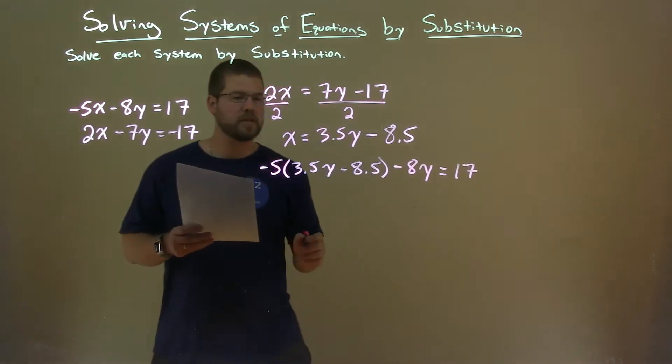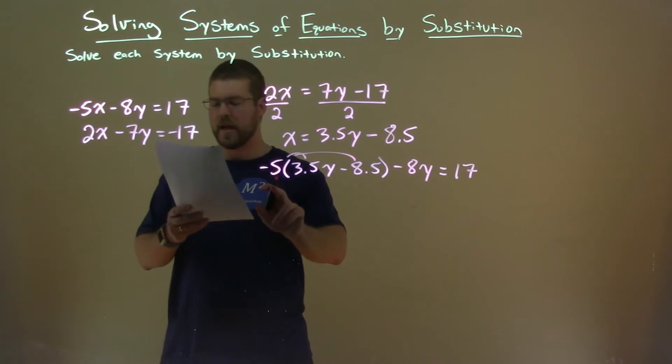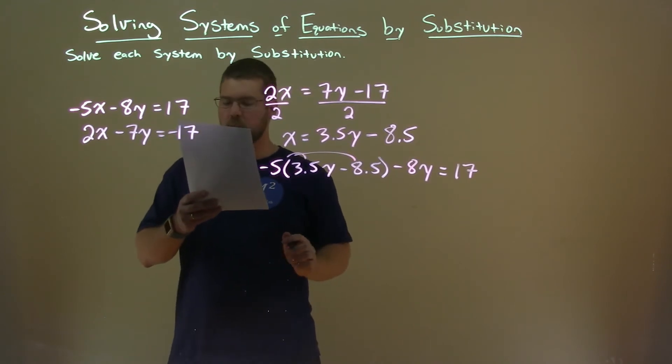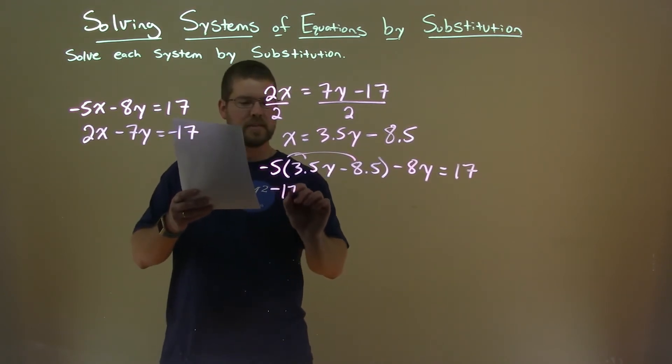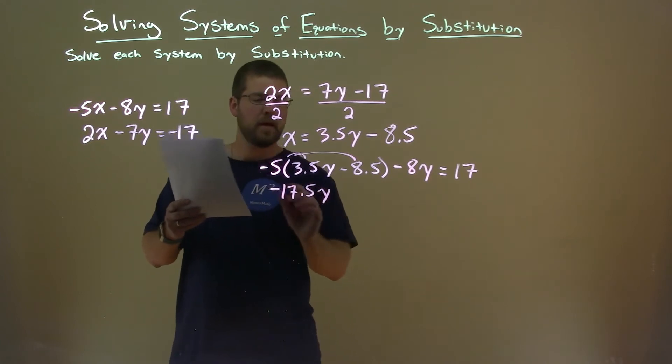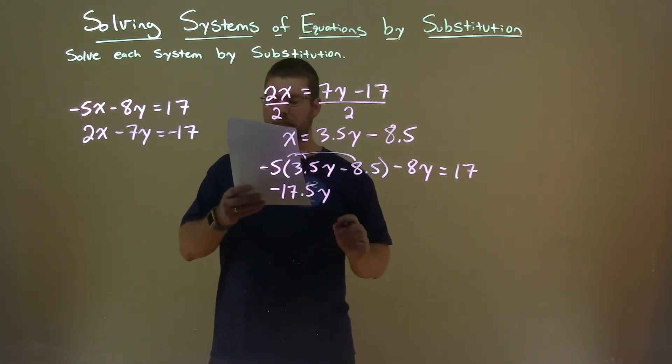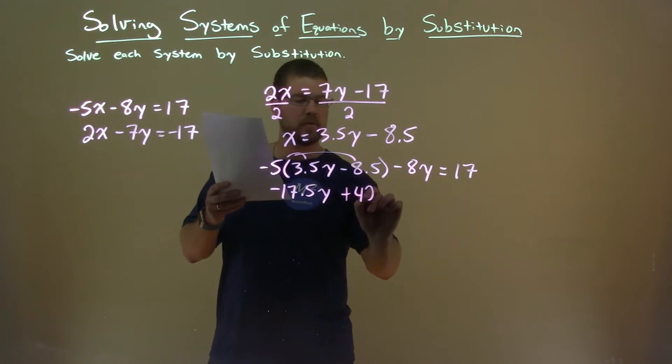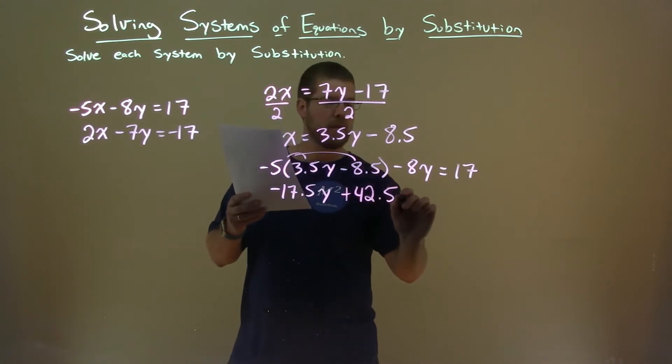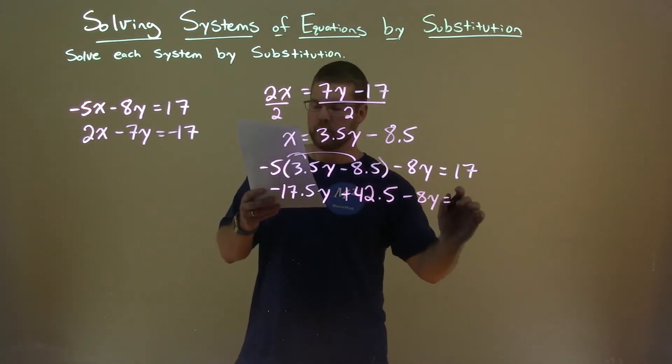-8y = 17. So again, we're solving for y. Distribute -5 to both parts. -5 times 3.5 is -17.5, keep the y. -5 times -8.5 is positive 42.5.